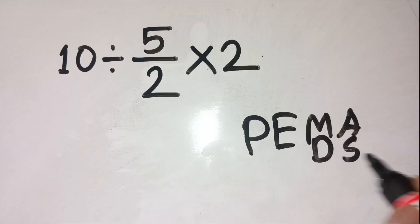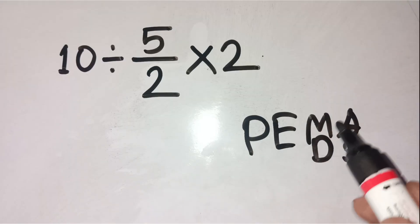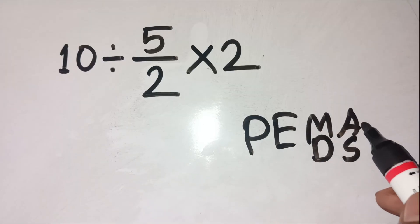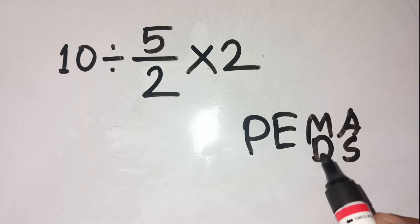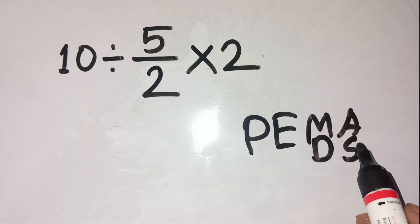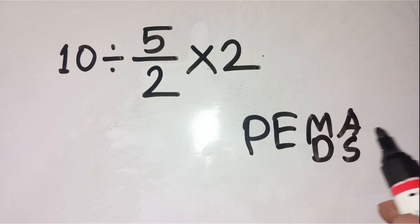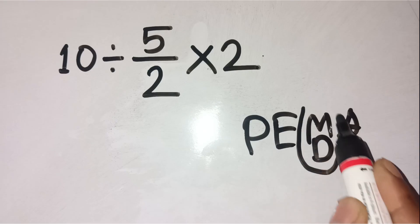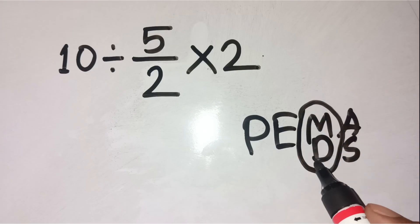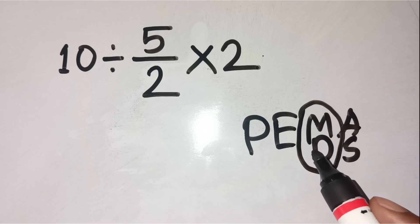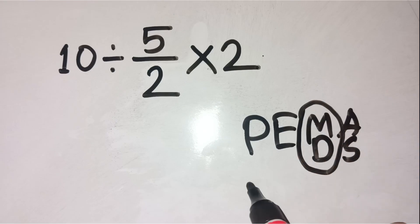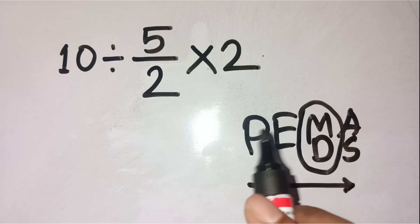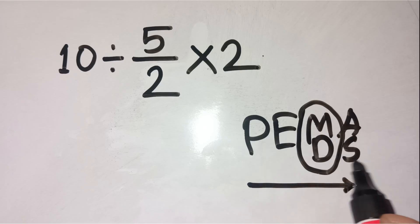which stands for Parentheses, Exponents, Multiplication, Division, Addition, and Subtraction in that exact order. But here's the thing most people forget: Multiplication and Division have equal priority, which means you go left to right — not all multiplication first or all division first.